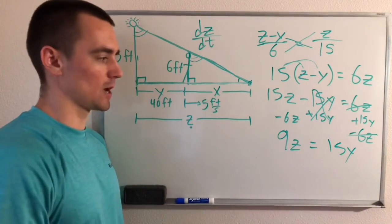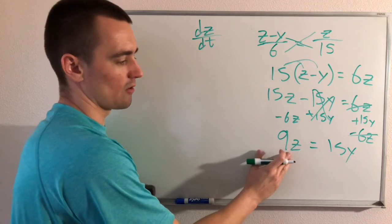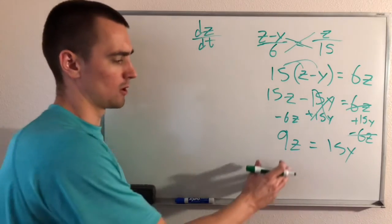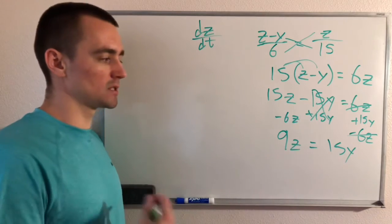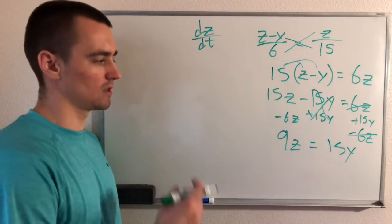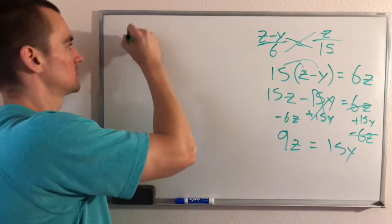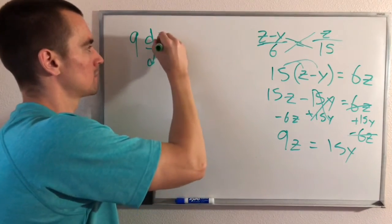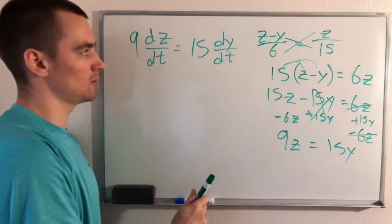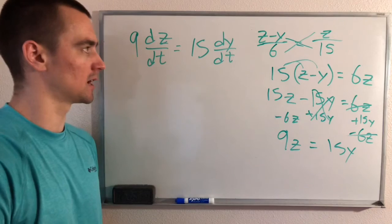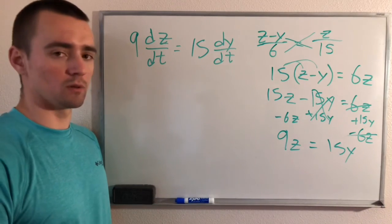Taking the derivative of both sides with respect to time is straightforward. We treat Z and Y as functions of time. A constant times a function differentiates to the constant times the derivative of that function, so we get 9 times dz/dt equals 15 times dy/dt.